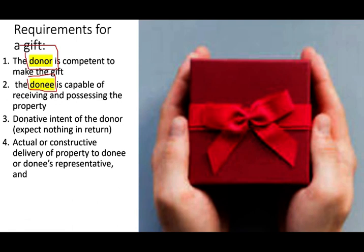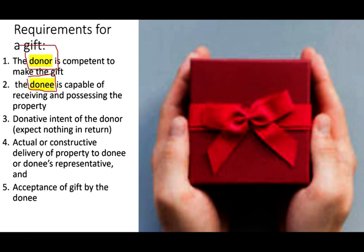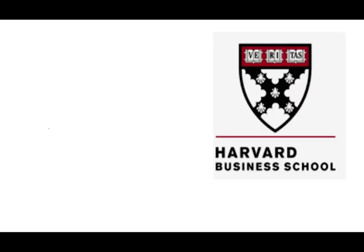Actual or constructive delivery to the donee or the donee's representative — I have to deliver the gift. It's not just a promise; I have to give it to you, either constructively put it in your name and give you unrestricted access in a bank account, or physically give you the money or whatever that property is. And acceptance of the gift by the donee — though there is a rule where if you reject the gift you have to do a disclaimer, but we're not going to talk about that.